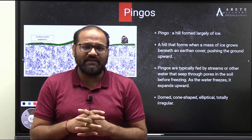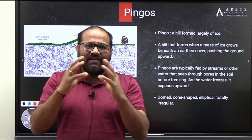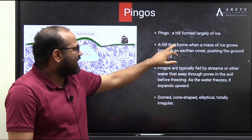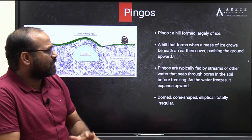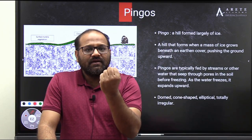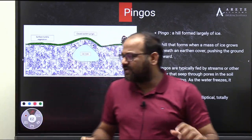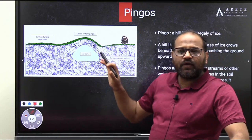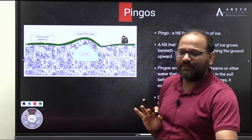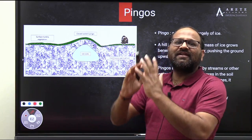Those frozen particles come together and, because of pressure, move upward inside the unfrozen land. The water particles come together, form ice, and that is how a hill forms — when a mass of ice grows beneath the earthen cover, pushing the ground upward. Water expands when it freezes, and that expansion forces it upward. This ice core pushing the land up in permafrost tundra regions is called a closed system pingo.